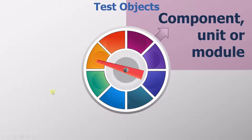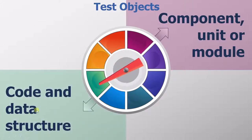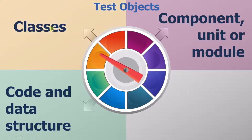The second is code and data structure. The third is classes. If you have any classes defined, for instance, in the C++ programming language, then they are also required for testing.